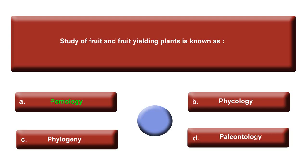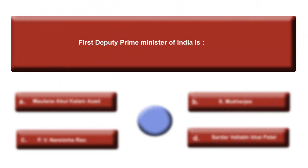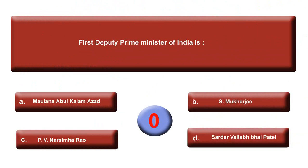The question is: Who is the first Deputy Prime Minister of India? Your time starts now. Option A: Maulana Abul Kalam Azad. Option B: S. Mukherjee. Option C: P. V. Narasimha Rao. Option D: Sardar Vallabhbhai Patel.